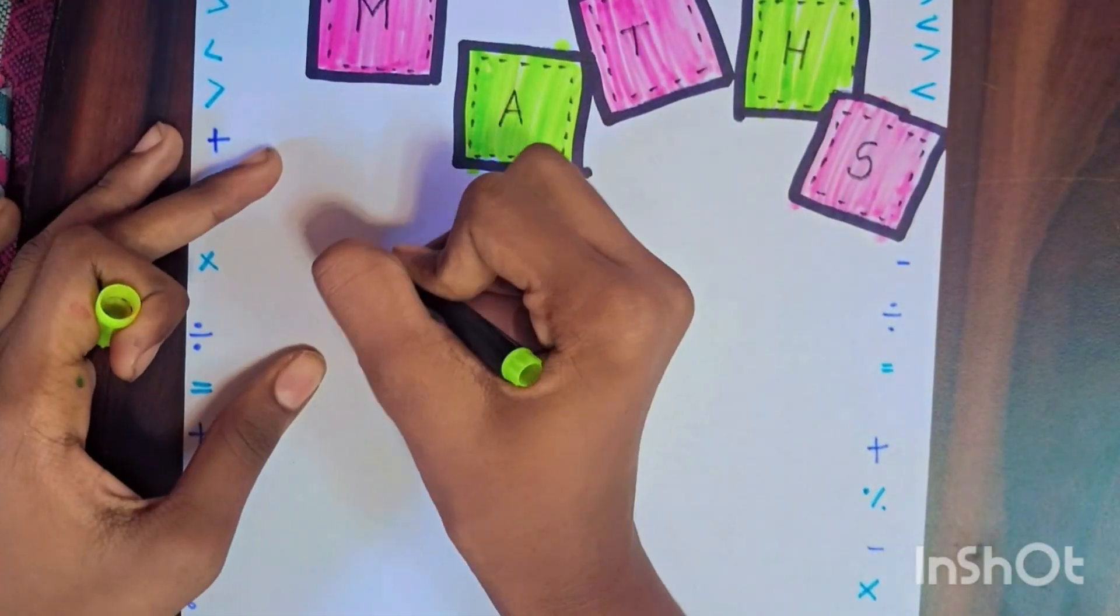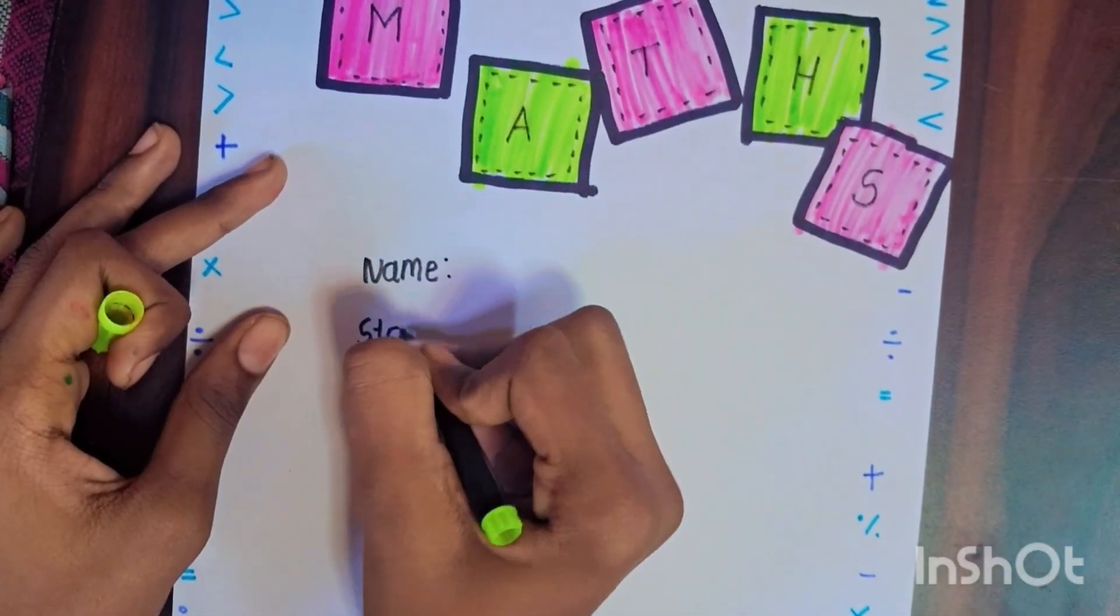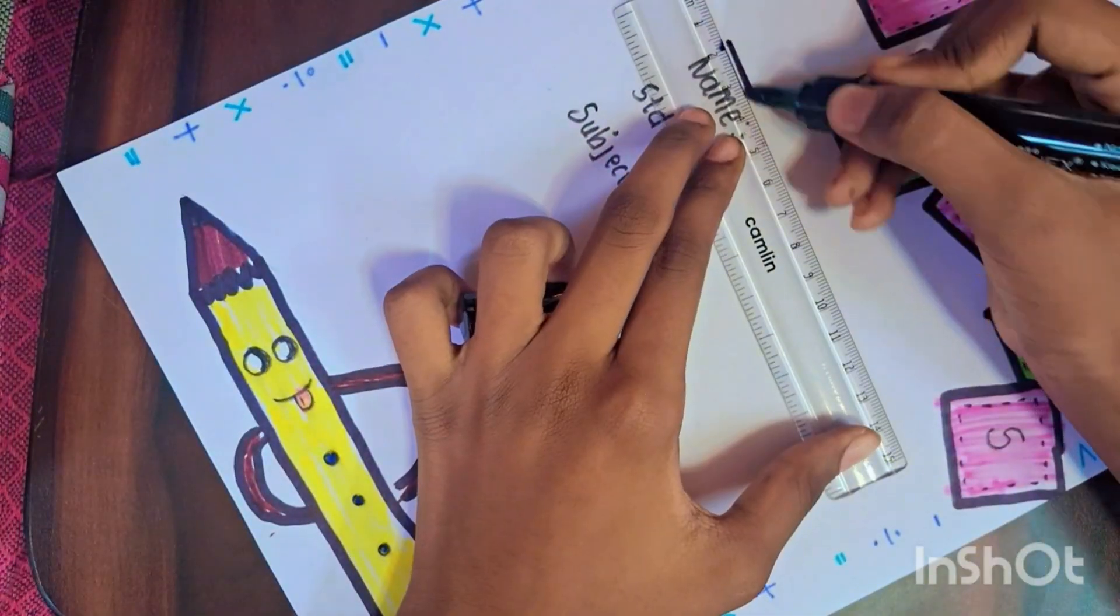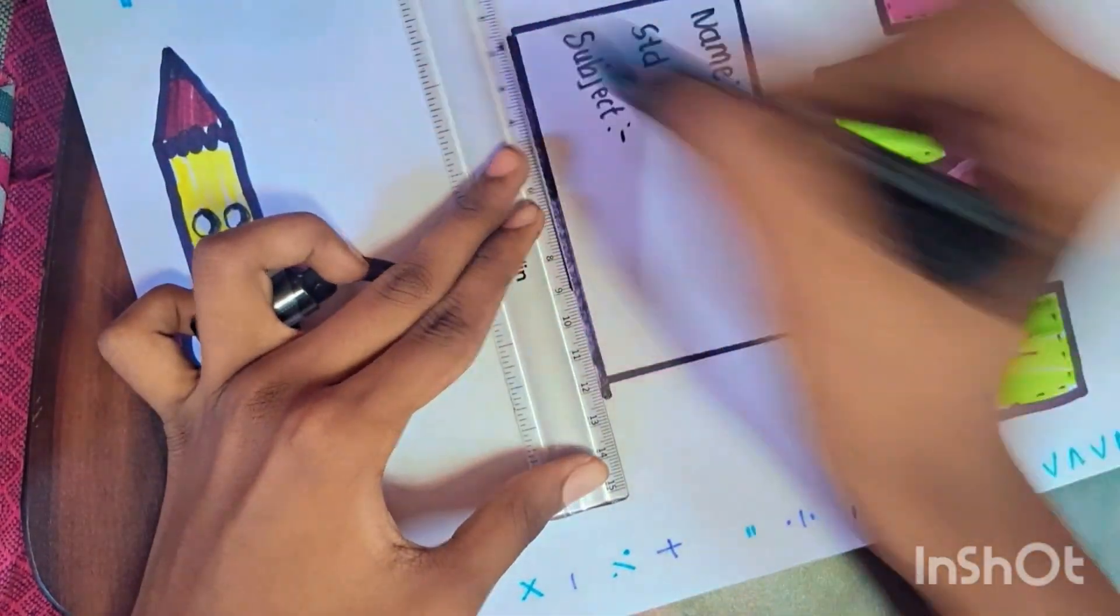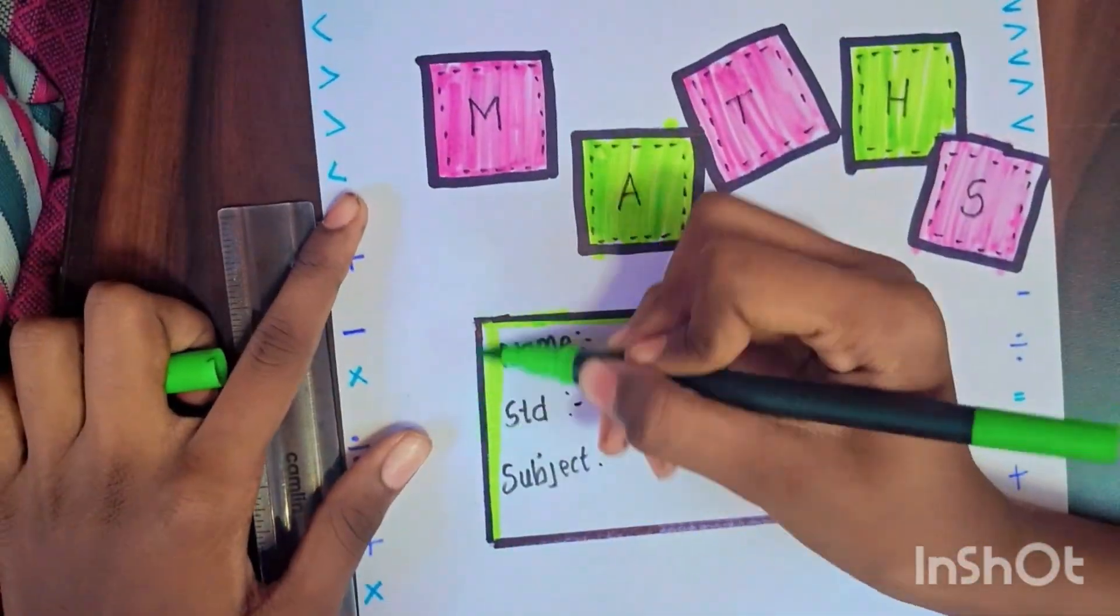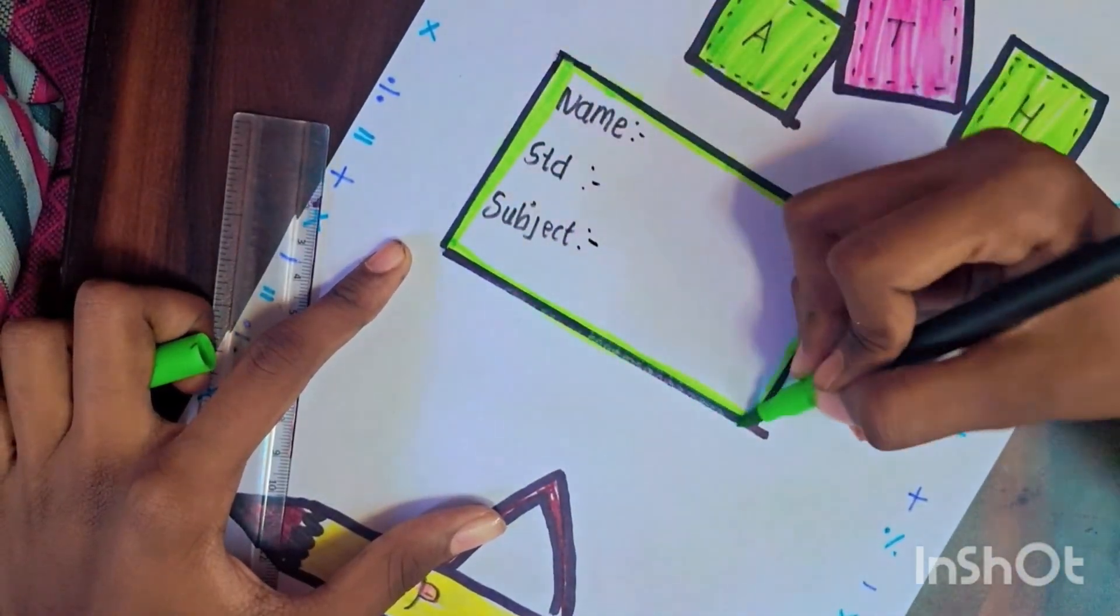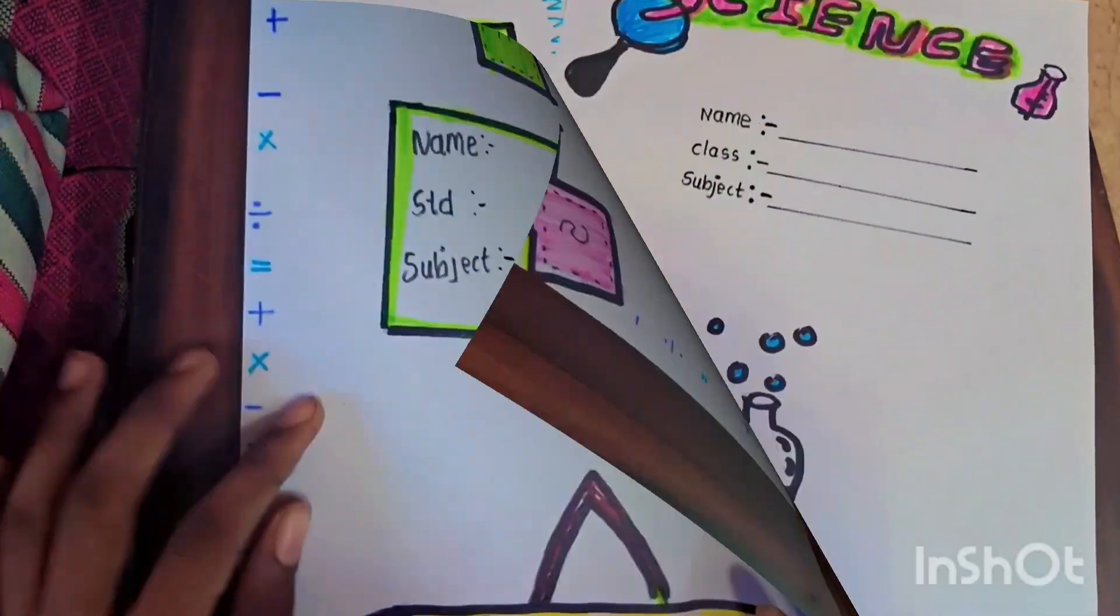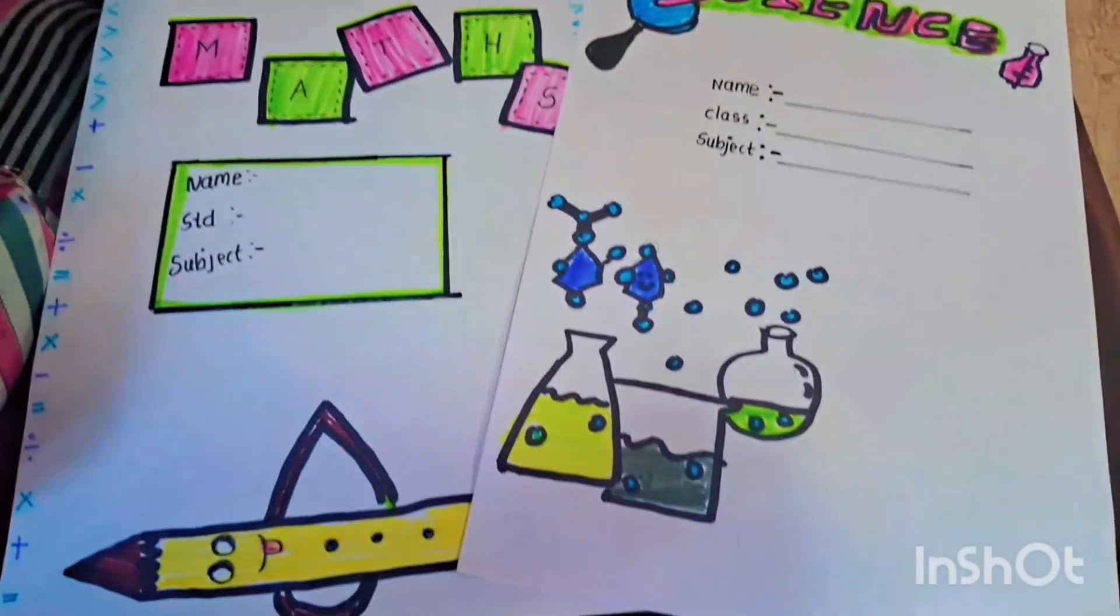As you can see, the next one is the same thing. Here's the name and subject. The last one is the same thing. Let's see the highlight. I can see that the highlight is the same thing. See you in the next video.